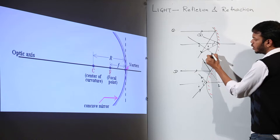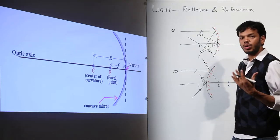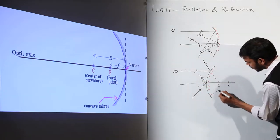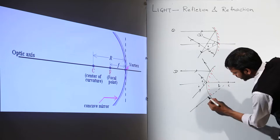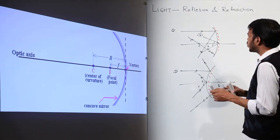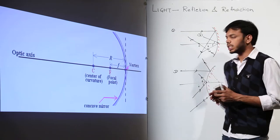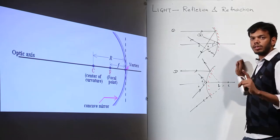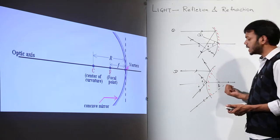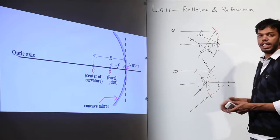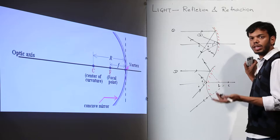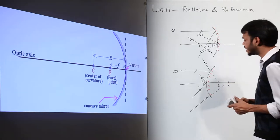Ray number three, which passes through the center of curvature, gets reflected straight back — it retraces its path. The same is true for a convex mirror: the ray incident along the center of curvature reflects back. These three rays apply not just to mirrors but also to lenses, though for lenses the third ray from the optical center is treated differently — we'll cover that when we do ray diagrams for spherical lenses.